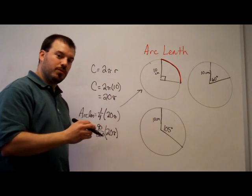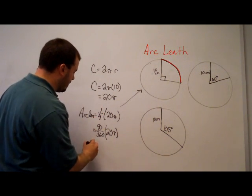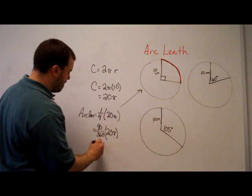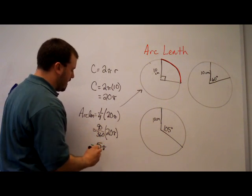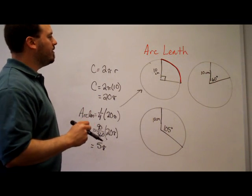Either way, if I use one-fourth times 20 pi, or 90 over 360 times 20 pi, since those are equivalent fractions, I would have 5 pi as my arc length. And you can type it into your calculator to get a decimal approximation if you'd like.